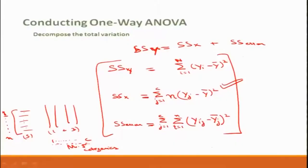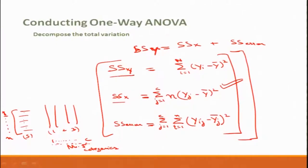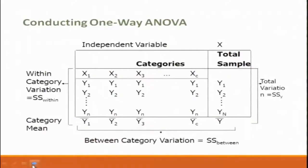Welcome to Part 2 of the Analysis of Variance session. Where were we? We were discussing these relationships for the total variation, between variation, and error variation. Let me put it in a tabular form here.